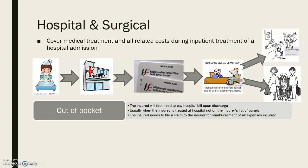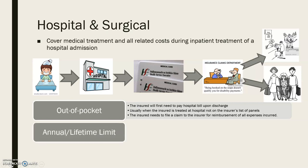Out-of-pocket expenses are elements that the insured will first need to pay on the hospital bill upon discharge. This usually occurs when the insured is treated at a hospital not on the insurance panel list. The insured then needs to file a claim to the insurer for reimbursement of all expenses incurred, as long as it is covered under the insurance policy.